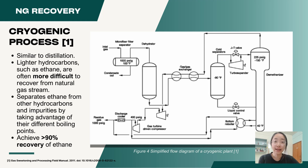This is because lighter hydrocarbons such as ethane are often more difficult to recover from a natural gas stream. The principle of cryogenic separation separates ethane from other hydrocarbons and impurities by taking advantage of their different boiling points, which could achieve more than 90% recovery of ethane.